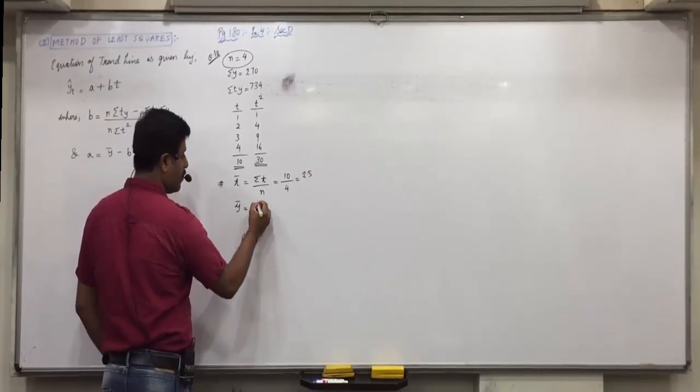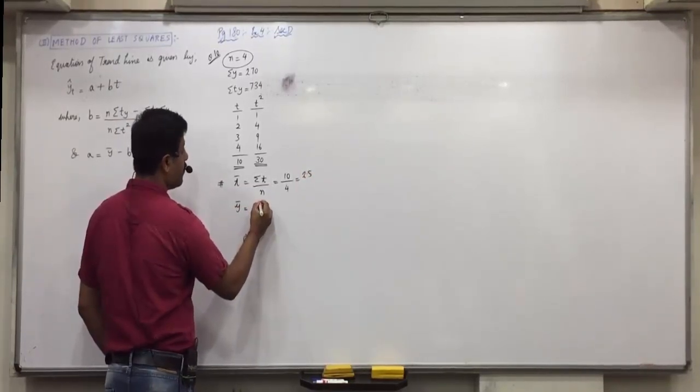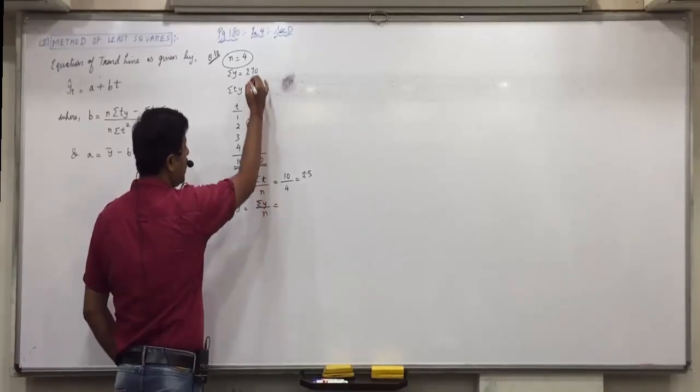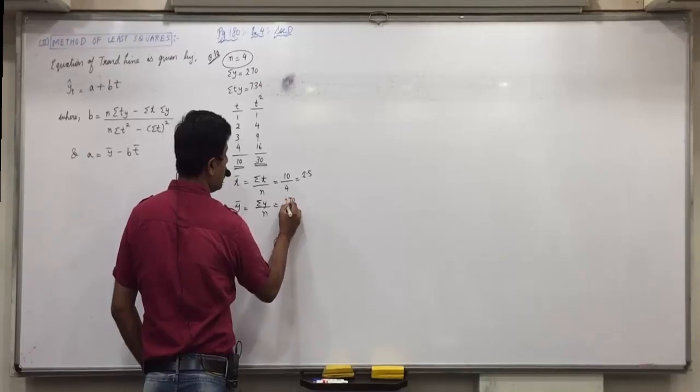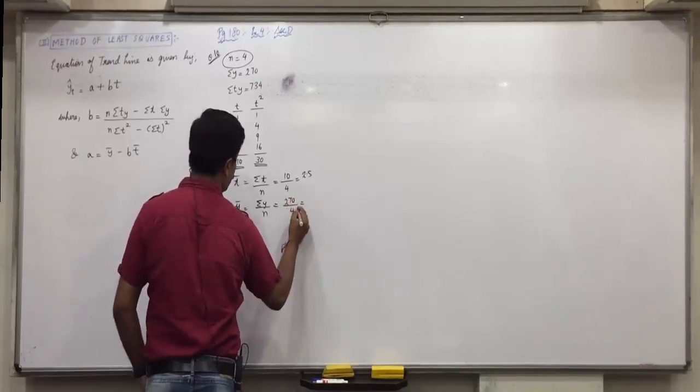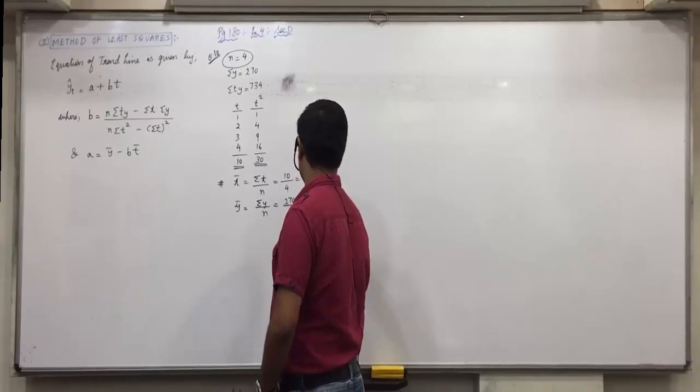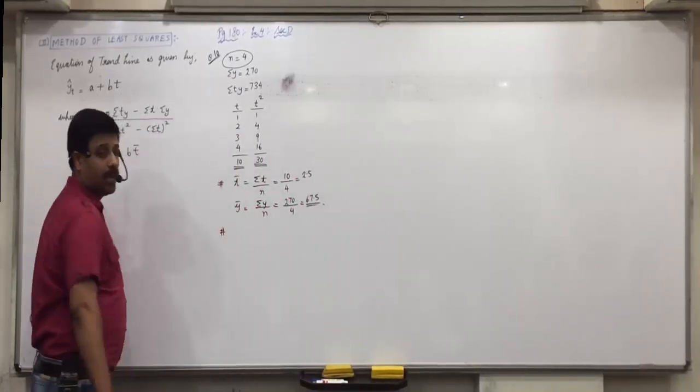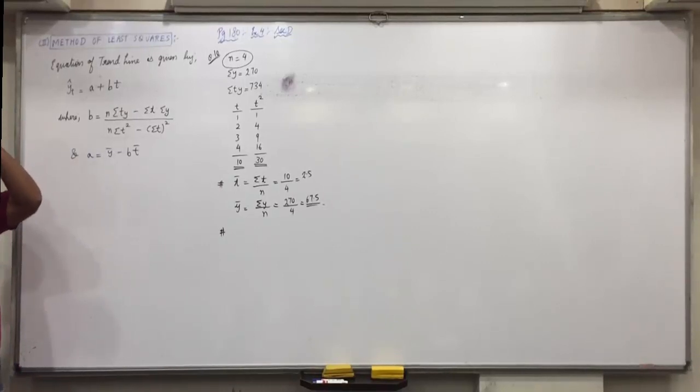Y bar is equal to sigma y upon n. Y bar equals to sigma y upon n. Is equal to 270 upon 4. 270 upon 4. 67.5. Is everyone clear with this?